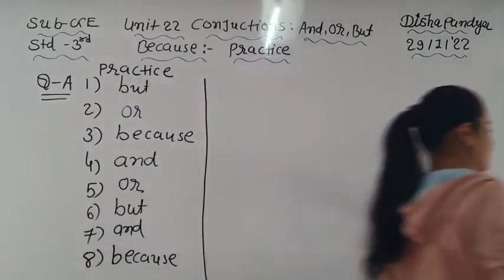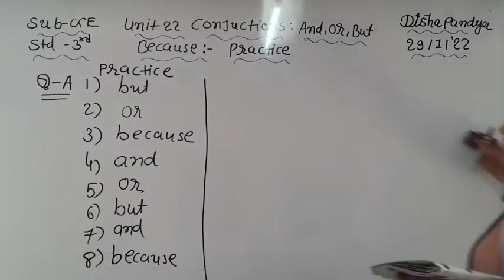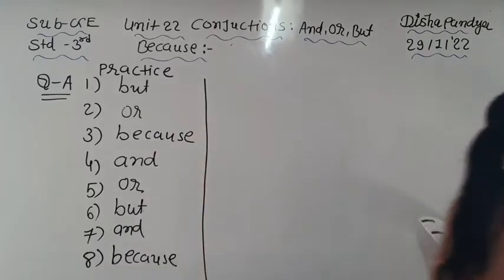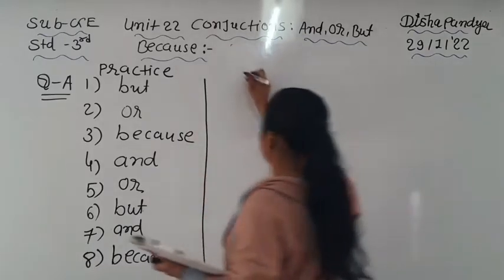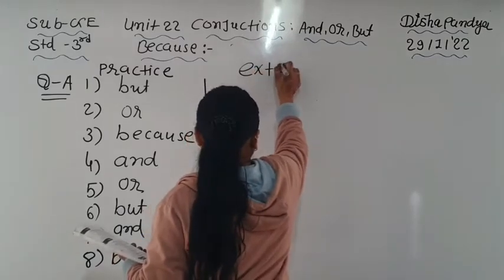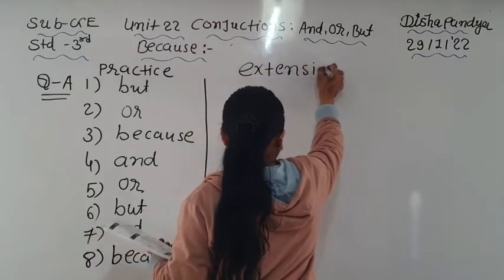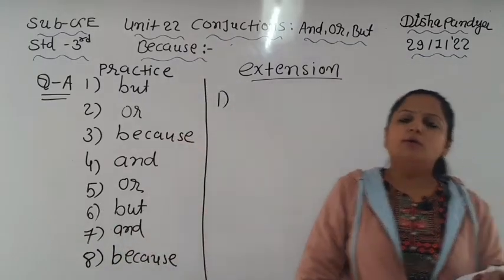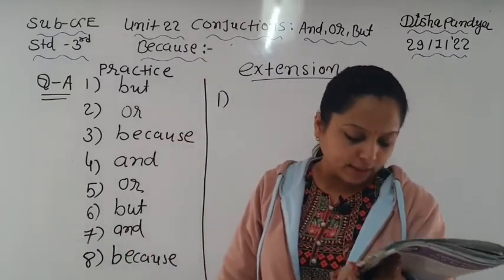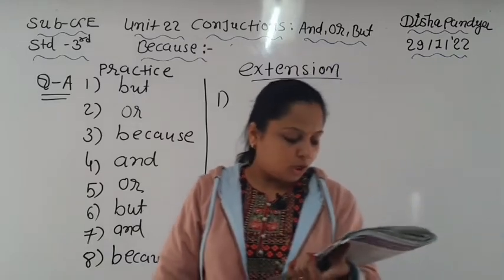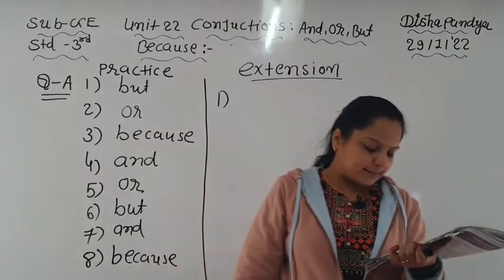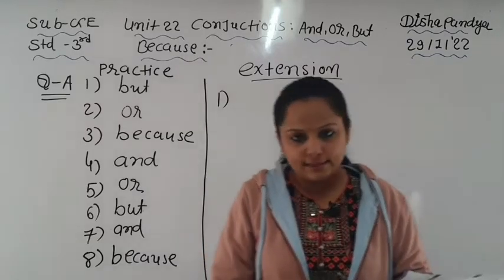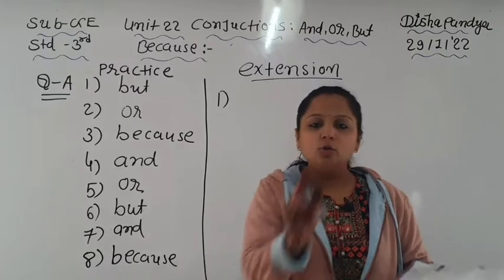Now, extension exercise. Here I am going to solve the extension exercise. I am going to read the question first. Question number A on page number 63: join the following sentences using 'and', 'or', 'but', and 'because'. You can write a couple of sentences as well.